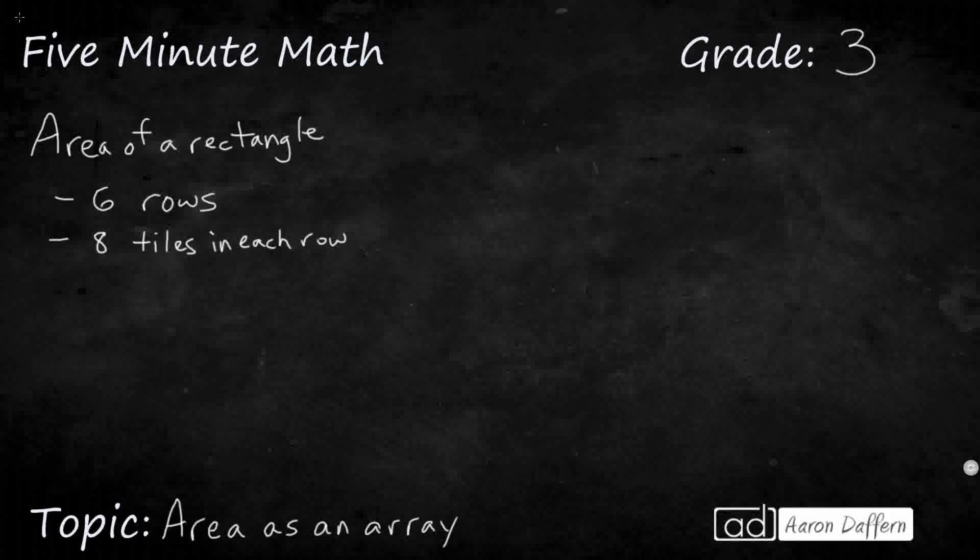So take a look at this example here. We need to find the area of a rectangle. Now, we can visualize that rectangle as six rows, and we're going to have eight tiles in each row. So let's come up with our six rows. I'm just going to kind of number these right here, and I'm going to put eight tiles in each row.